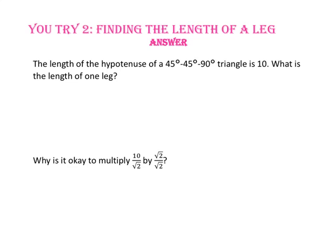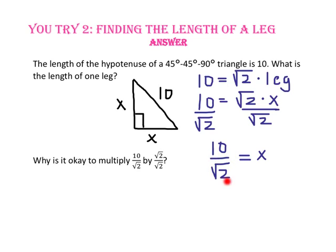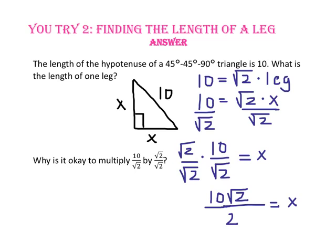Pause the video and do you-try number 2. The length of the hypotenuse of a 45-45-90 triangle is 10. What is the length of one leg? The hypotenuse equals the square root of 2 times x, so dividing both sides by the square root of 2 gives x equals 10 over the square root of 2. Rationalizing the denominator by multiplying by the square root of 2 over the square root of 2: the square root of 2 times 10 is 10 radical 2, and the square root of 2 times the square root of 2 is 2. Simplifying by dividing 10 by 2, x equals 5 times the square root of 2. This is valid because the square root of 2 over the square root of 2 equals 1, so we are multiplying by 1.